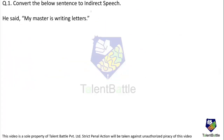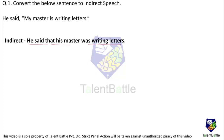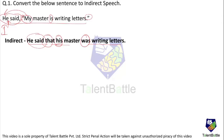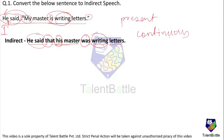Convert the sentence to indirect speech: 'He said, my master is writing letters.' The indirect speech would be: 'He said that his master was writing letters.' 'Said' remains the same, quotation marks are replaced by 'that,' 'my' becomes 'his' because we are reporting about someone else, and 'is writing' (present continuous) converts to 'was writing' (past continuous) because the action was ongoing in the past.